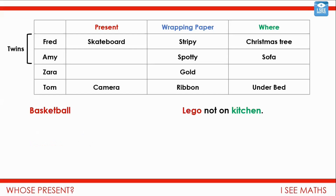There's only one place left, and that is the kitchen — so it must be Zara whose present is in the kitchen. That's not Lego, so it must be Amy whose present is Lego. I can position those and get rid of that clue. And what does that leave us with? It leaves us with Zara, who must have got the basketball.